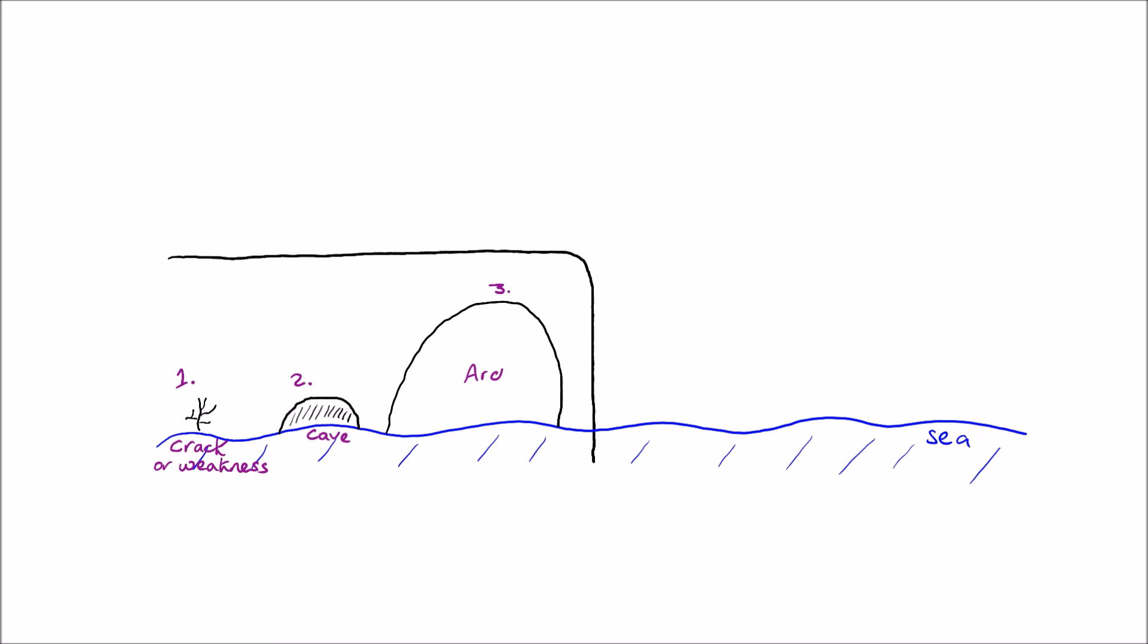As this cave enlarges and gets bigger, eventually what will happen is that it will go all the way through the headland and extend across to the other side. When that occurs an arch will form, labelled number 3.